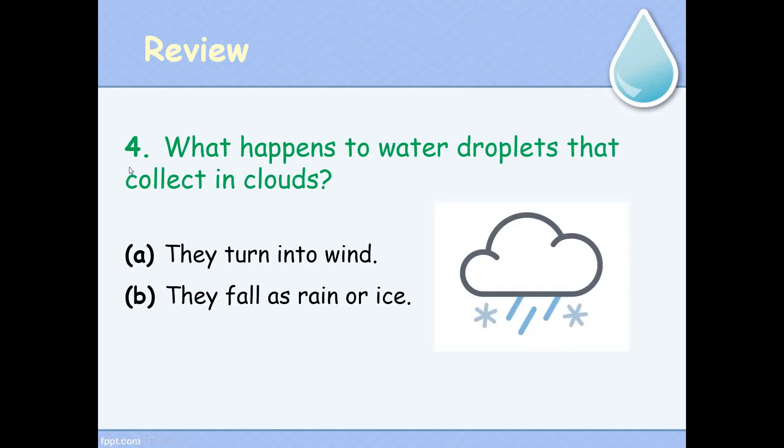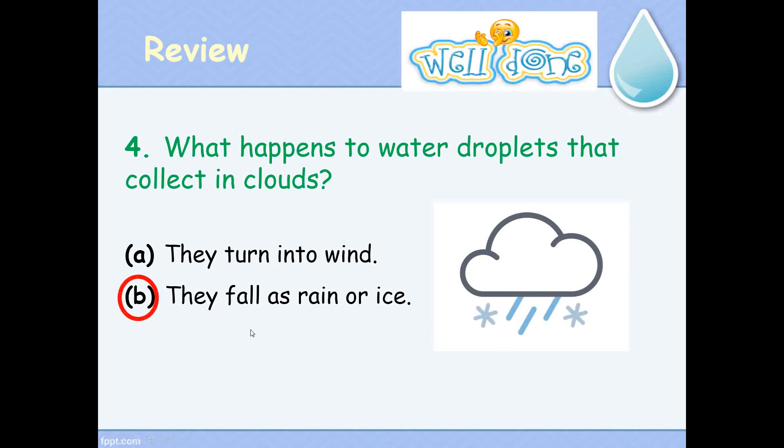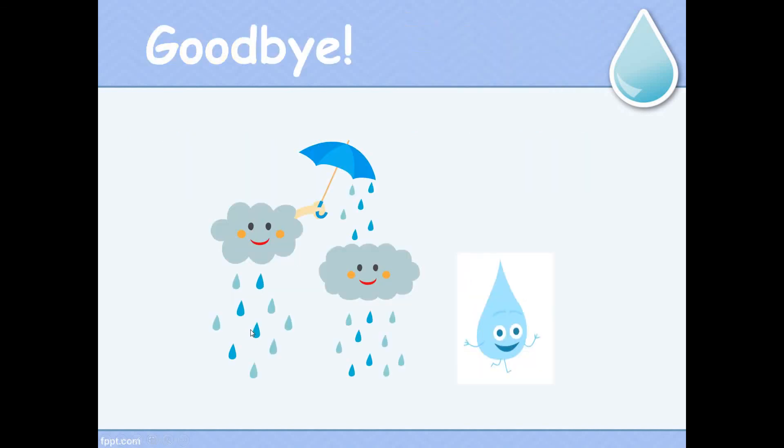Number 4. What happens to water droplets that collect in clouds? A, they turn into wind, or B, they fall as rain or ice. Yes, super. They fall as rain or ice. Thank you for listening. Goodbye.